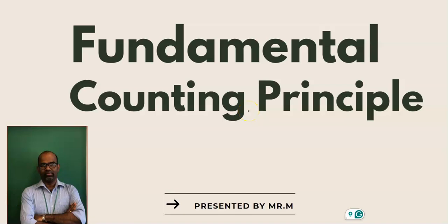Hi, hello everyone, this is Mr. M from Algebra Lessons. Today's video is about the Fundamental Counting Principle. The principle states that if there are m ways to do one thing and n ways to do another thing, then there are m times n ways to do both of them together. This can be extended to more than two events.